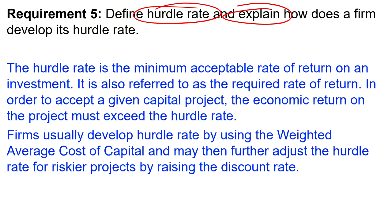Finally, Requirement 5 asks us to define hurdle rate and explain how a firm develops it. The hurdle rate is the minimum acceptable rate of return on an investment, also referred to as the required rate of return. In order to accept a given capital project, the economic return on the project must exceed the hurdle rate. Firms usually develop the hurdle rate by using the weighted average cost of capital, and may further adjust it upward for riskier projects. So in summary, this question covered working capital, political risk, mutually exclusive projects, hurdle rate, and additional information needed.